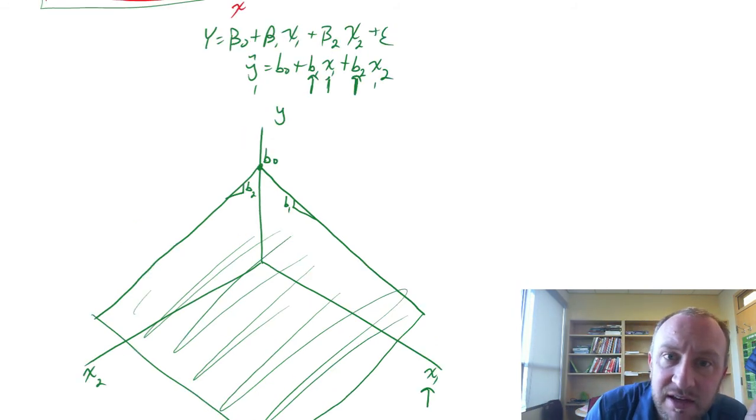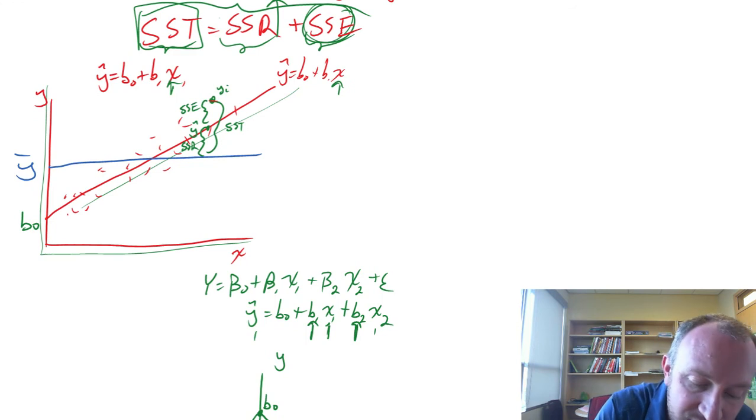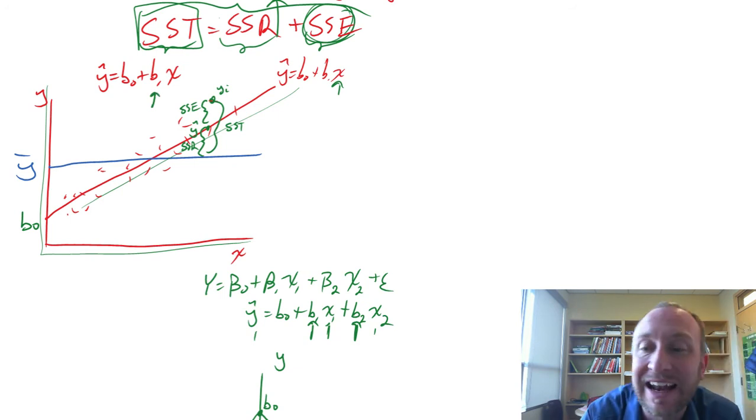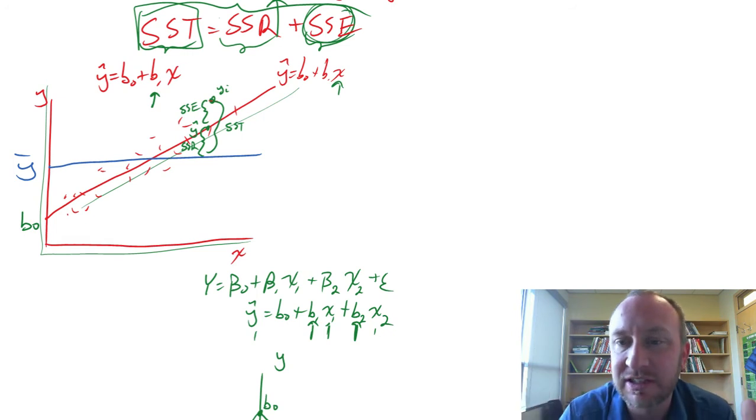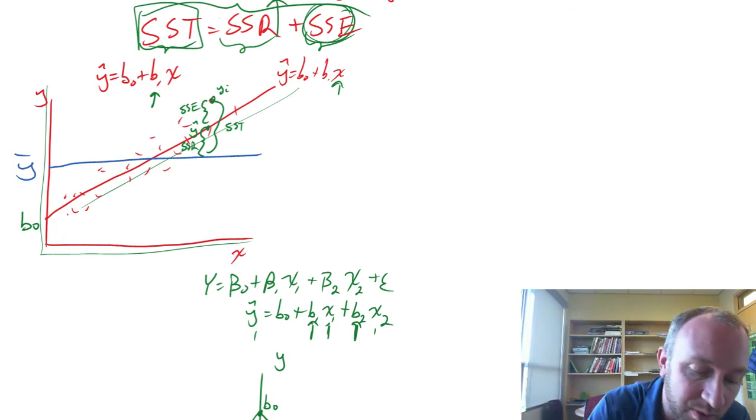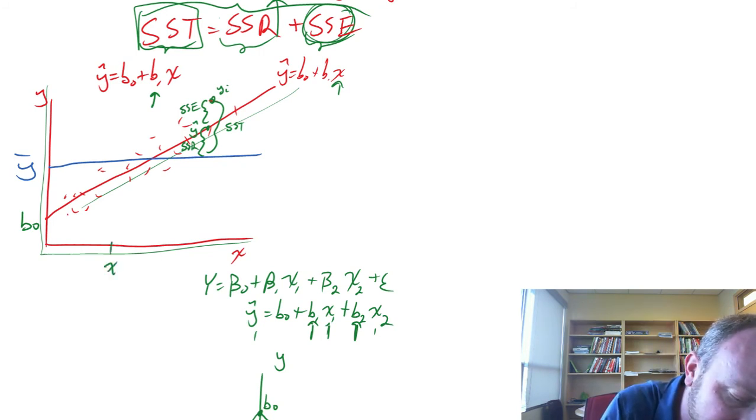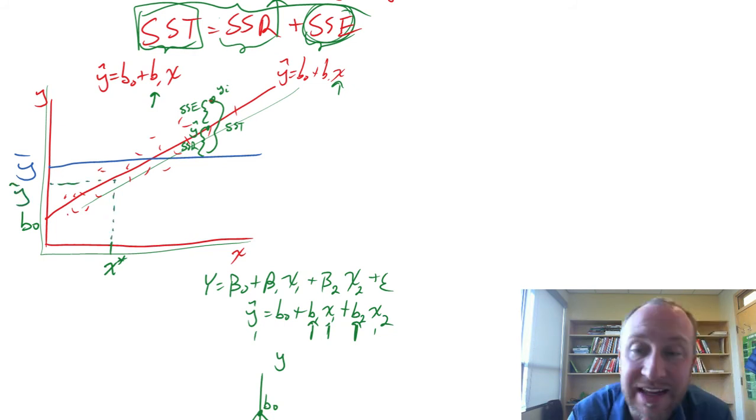So just as up here we could use this regression, this estimated regression, for really two things. One, we could determine or analyze the marginal effect of a change in x on y. So maybe we were just interested in the slope - what does that tell us? Or we could be interested in using it for prediction. By that I mean, give me some value for x, x star. I can plug this into my estimated regression equation and I can predict some estimated value for that dependent variable.